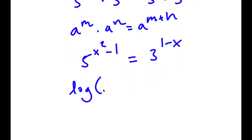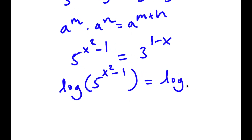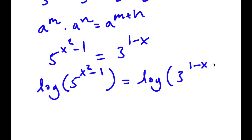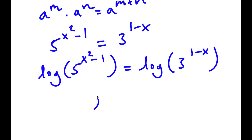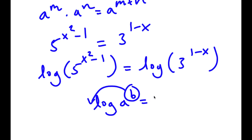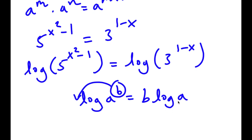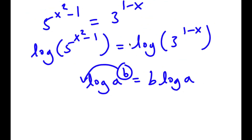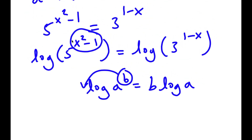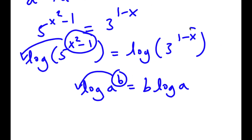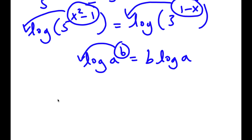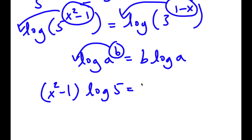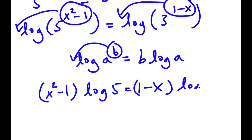Now I'm going to go ahead and take the log of both sides. So I have log 5 to the power of x squared minus 1 is equal to log 3 to the power of 1 minus x. And if I have something in the form log a to the power of b, I can move this exponent b to the front of the logarithm, giving b times log a. So now I have x squared minus 1 times log 5 is equal to 1 minus x times log 3.